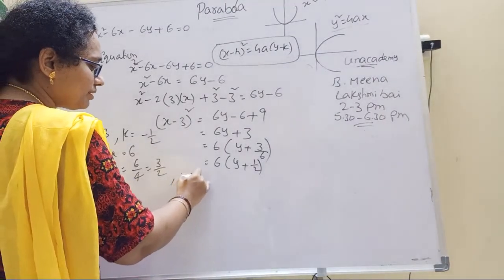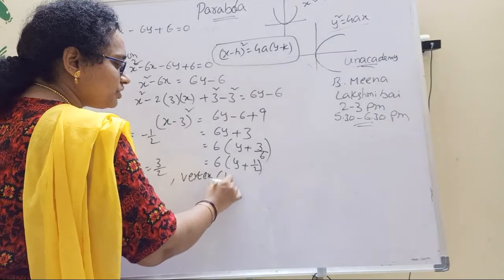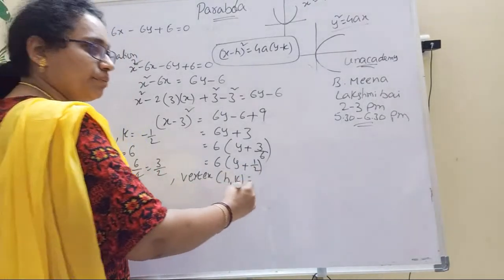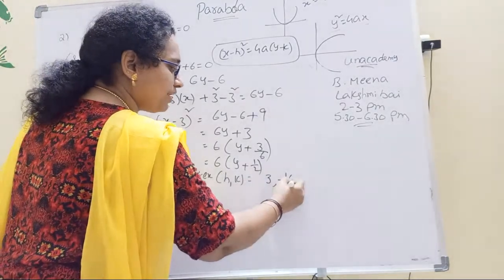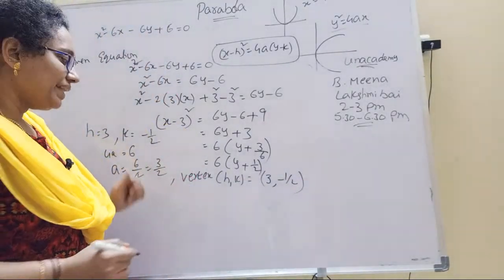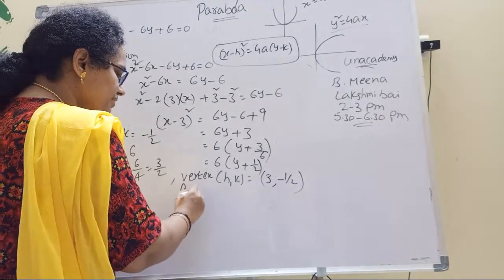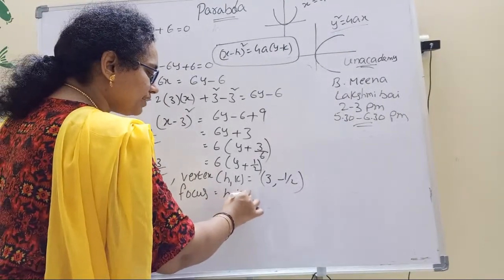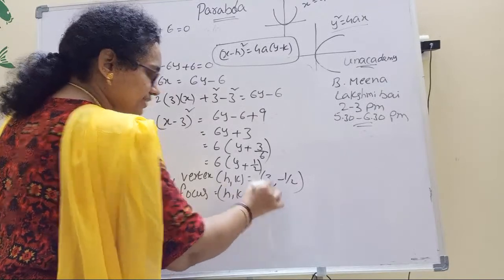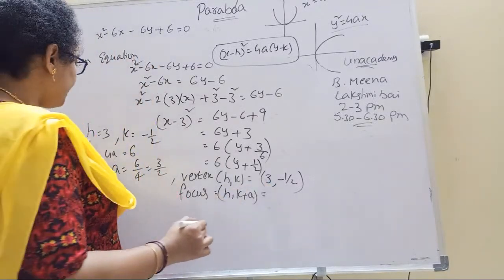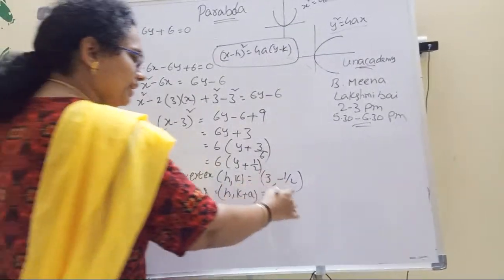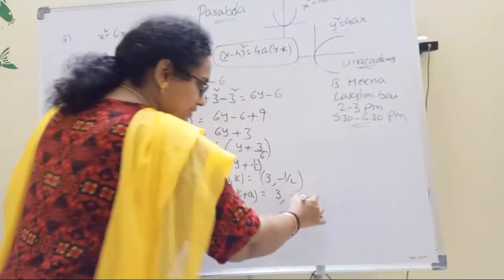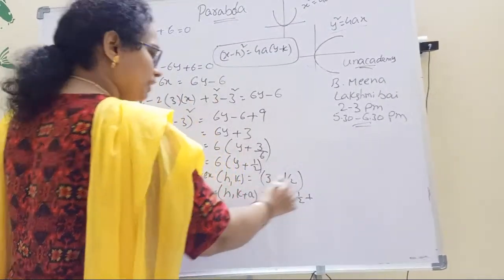What is the formula? Vertex formula is h, k. Vertex is 3, minus 1 by 2. Next, what is focus formula? Focus: h, k plus a. h is 3, k plus a is minus 1 by 2 plus 3 by 2.